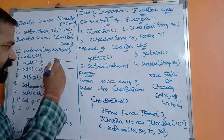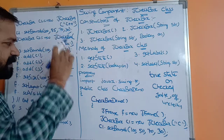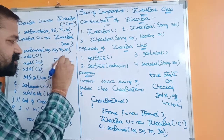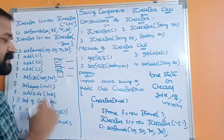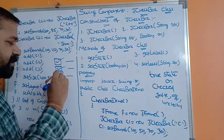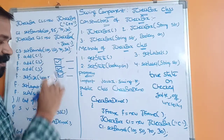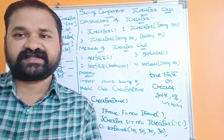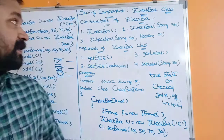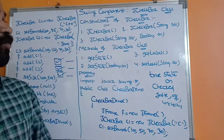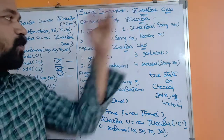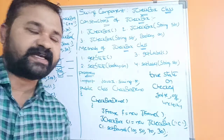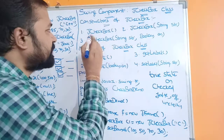The advantage of the checkbox is that we can select multiple options. For example, if playing cricket, reading books, and watching movies are all our hobbies, we can select all three. Likewise we can select any number of options. Now let's see the constructors of the JCheckbox class — there are mainly three constructors.